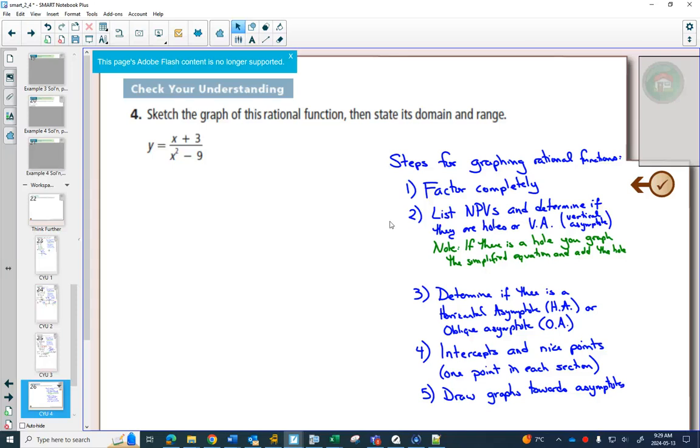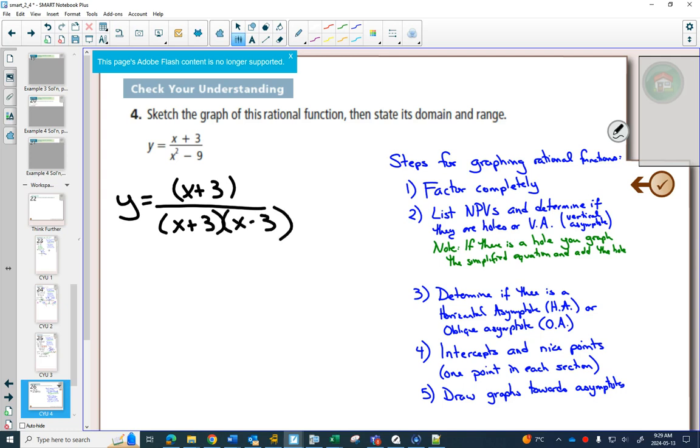And of all the examples, I would say that this one is a favorite of the exam, and I'll show you why. So first of all, we do our same steps. The bottom is a difference of squares, so I can factor x plus 3, x minus 3. I can list my non-permissible values that x can't equal negative 3 and x can't equal 3.